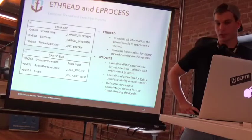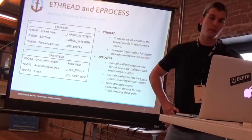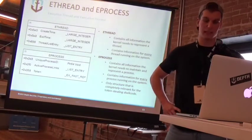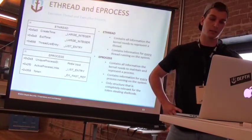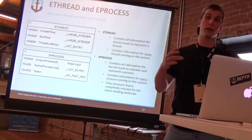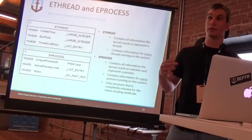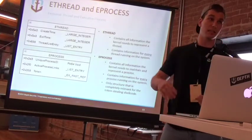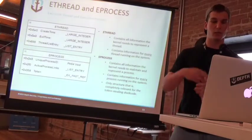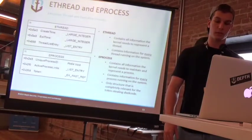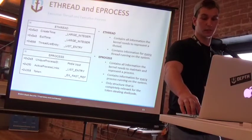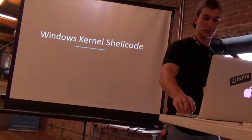The next two structures are eThread and eProcess. They're basically the same thing but in different contexts — one is in the context of a thread, one is in the context of a process. There is one structure for every single running thread and one for every single running process on the system. Any time you fire up a new process, one of these structures is created, stored into kernel space, and holds different information that the kernel needs to maintain the process. The eProcess structure is the only structure that's completely relevant to the token-stealing shellcode.